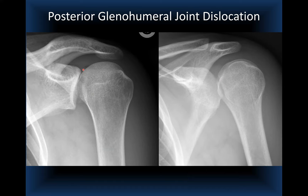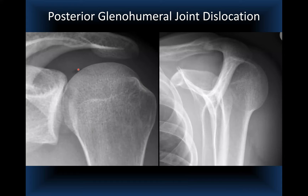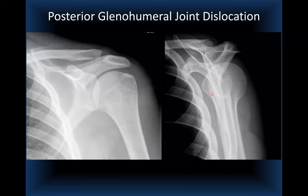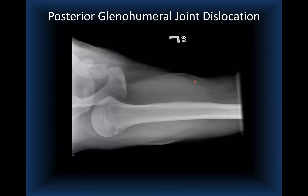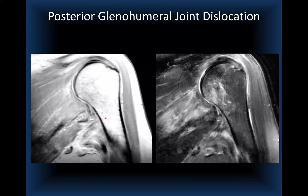On the magnified view and the transscapular Y view, the humeral head is displaced posteriorly with respect to the center of the scapular Y. On the axillary view, by gravity alone, you can clearly see the humeral head fallen off the glenoid posteriorly. On MRI in the acute posterior dislocation setting, the anatomy of the posterior cuff — infraspinatus and teres minor — is visible, and the humeral head is displaced posteriorly.